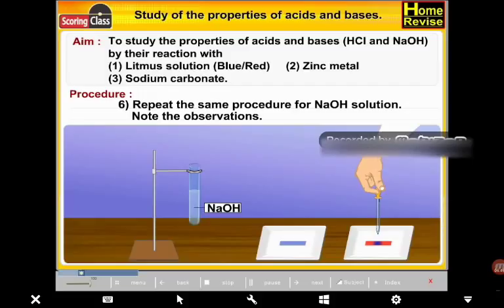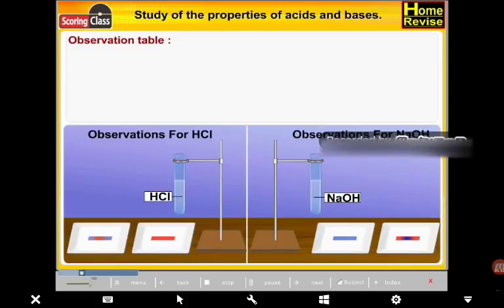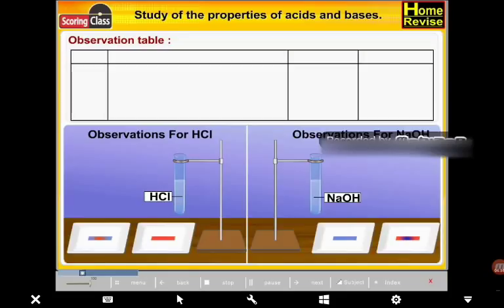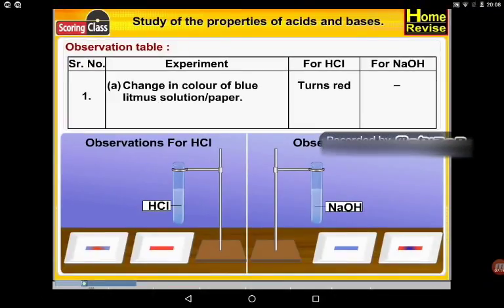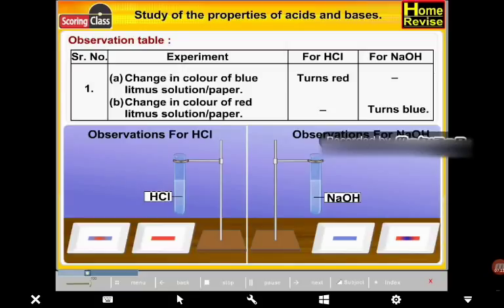Observation table with columns: serial number, experiment, observations for HCl, and observations for NaOH. (A) Change in color of blue litmus solution or paper: In the case of HCl, it changes to red. In the case of NaOH, it remains the same (blue). (B) Change in color of red litmus solution or paper: In the case of HCl, it remains the same (red). In the case of NaOH, it turns blue.